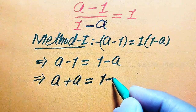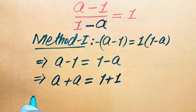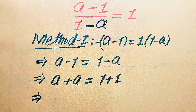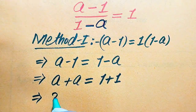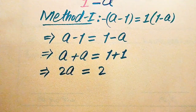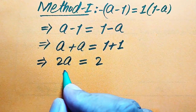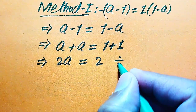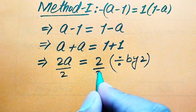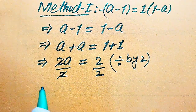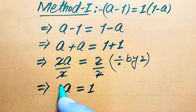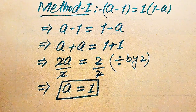Moving minus 1 to the right-hand side gives plus 1. Now summing the like terms: a plus a becomes 2a, and 1 plus 1 becomes 2. So we have 2a equals 2. Dividing both sides by 2, the twos cancel out and we get a equals 1. This is the final value of a from the first method.